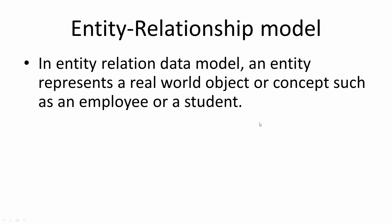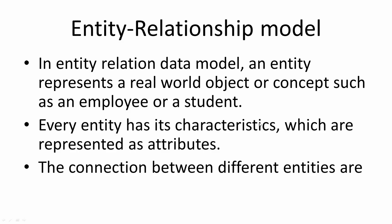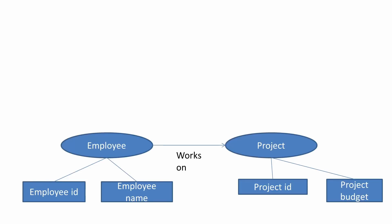Each entity has its own characteristics, which are called attributes in this data model. Then we have connections between different entities. Just having entities alone doesn't make sense, so we have to create connections between entities to represent the data about them. This connection between different entities is represented as relations.